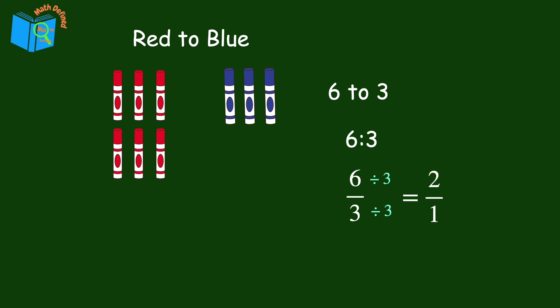Dividing both numbers by three, we get two over one. This means the ratio is for every two red markers, there is one blue marker.